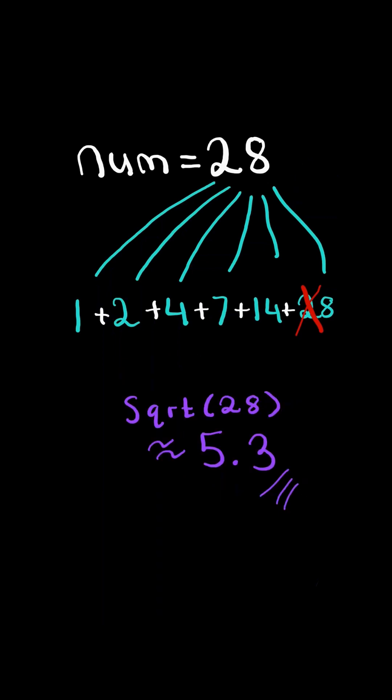Consider the square root of the number. It cuts our divisors in half. Notice the divisors on the left have a pairing on the right.